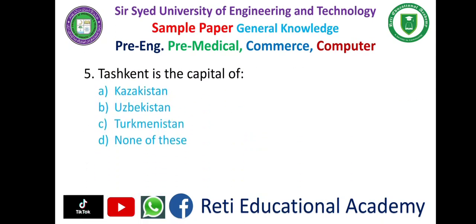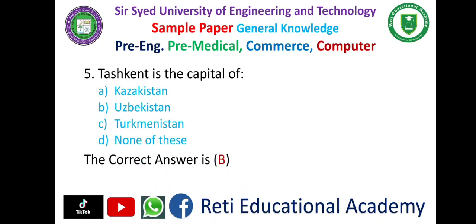Question No. 5: Tashkent is the capital of — A. Kazakhstan, B. Uzbekistan, C. Turkmenistan, D. None of these. And the correct answer is B. Uzbekistan.